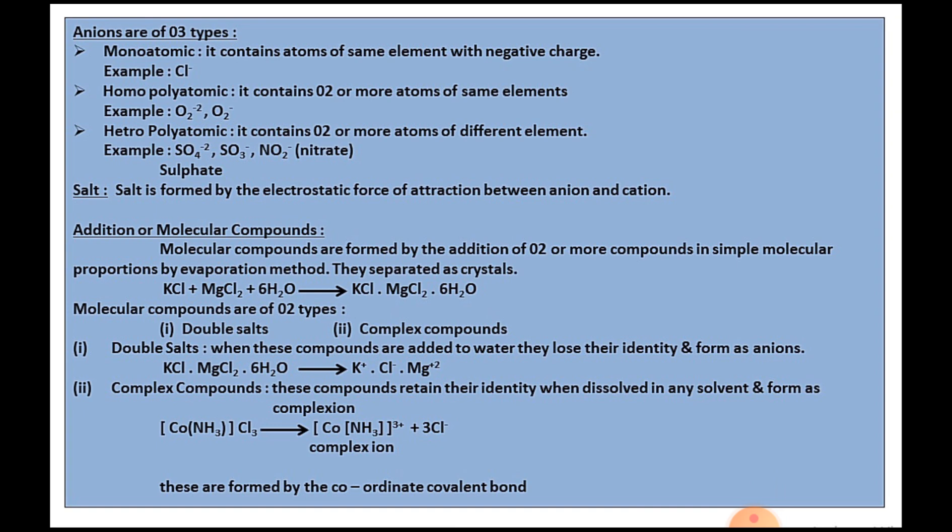Addition or molecular compounds: whenever we are adding two or more compounds in a particular proportion by evaporation method, we'll get molecular compounds. For example, KCl + MgCl2 + 6H2O, adding all this in a container and doing evaporation, we get KCl·MgCl2·6H2O. This is one compound, a molecular compound. These molecular compounds are divided into two types: double salts and complex compounds.